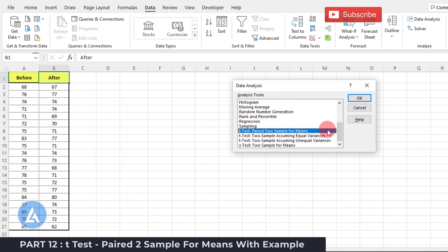T-Test Paired Two Sample for Means. As we are interested in Paired t-Test, we need to select this option for Paired Two Sample for Means. So select this option and click OK.